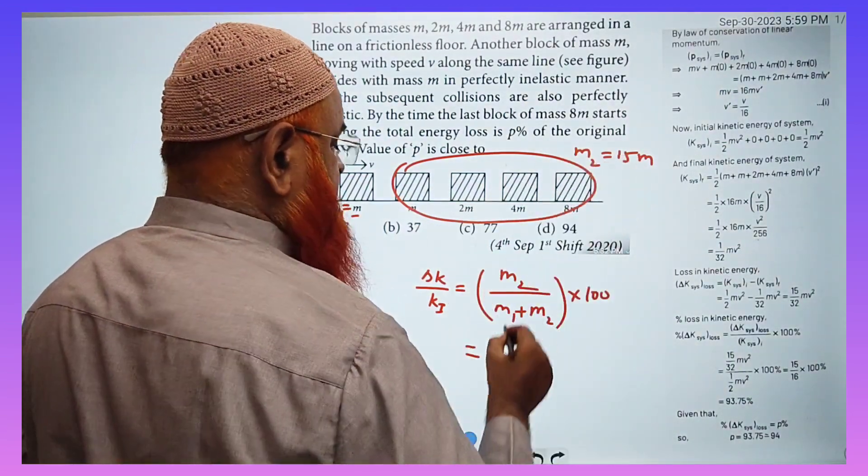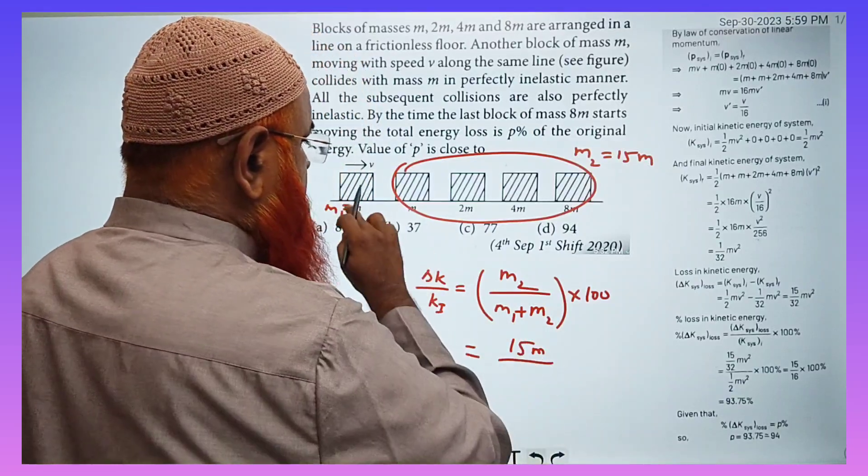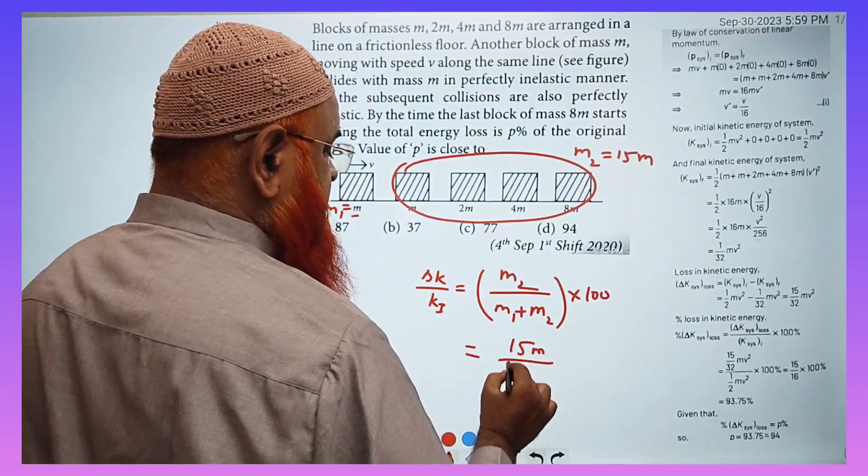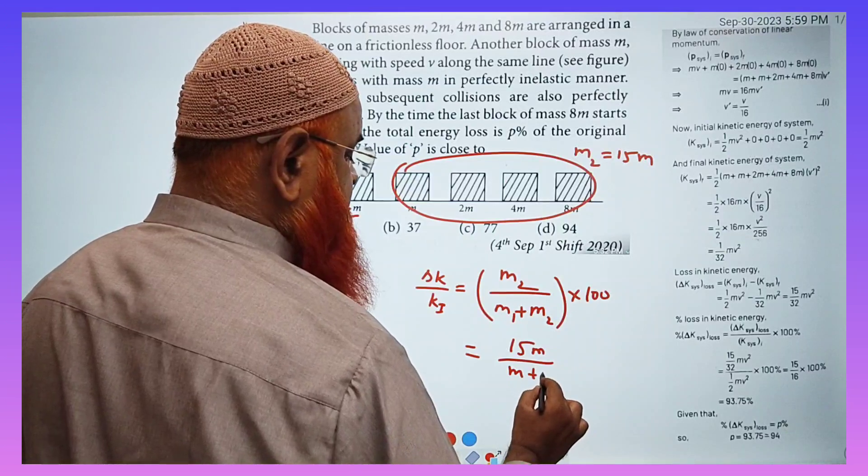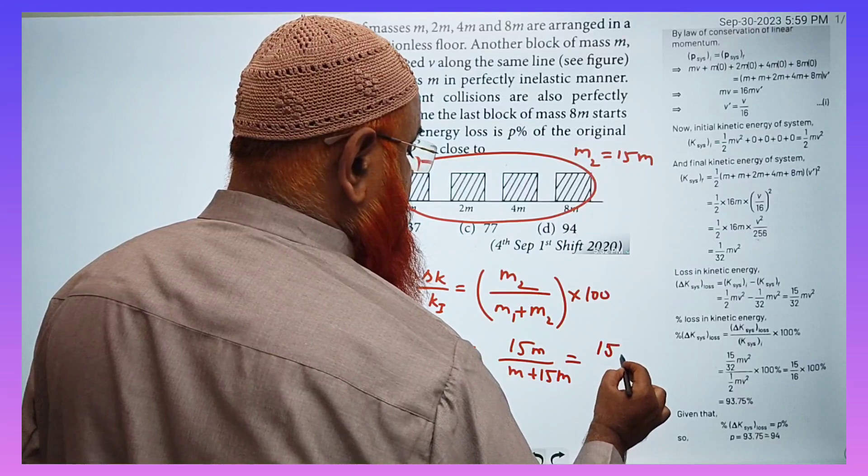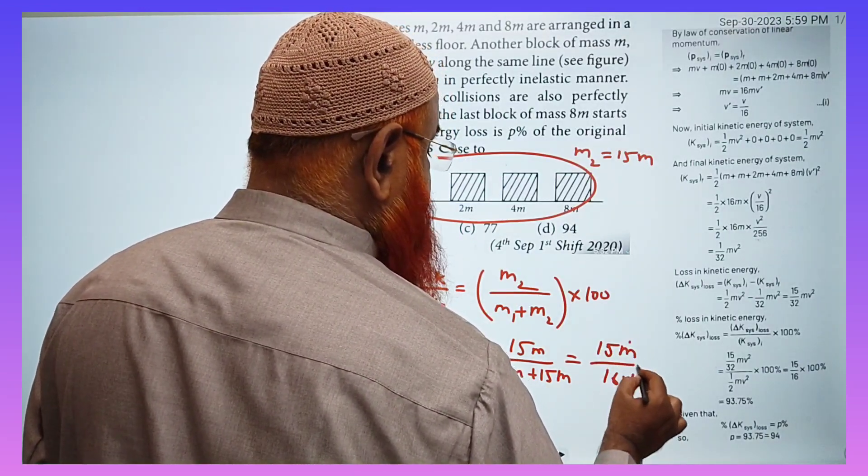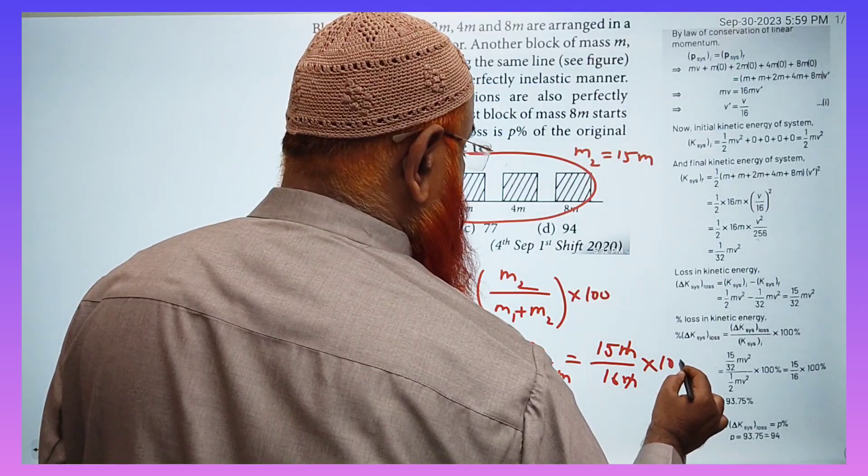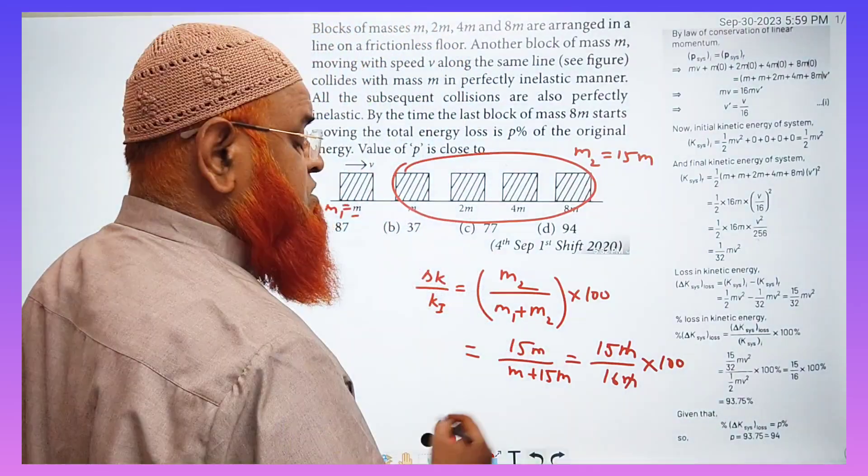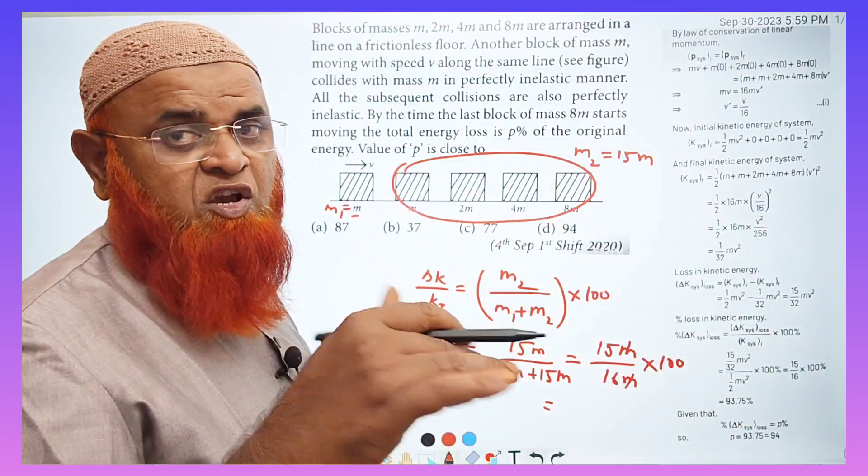So what is m₂ here? m₂ means it is 15m. So m₁ + m₂ means it is m plus again 15m. So therefore it is going to be 15m divided by 16m. Cancel and into 100 you have to use here.